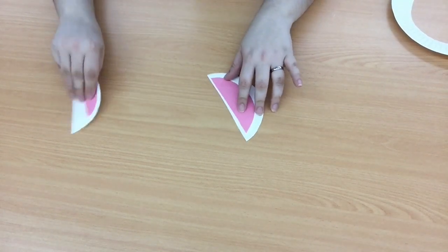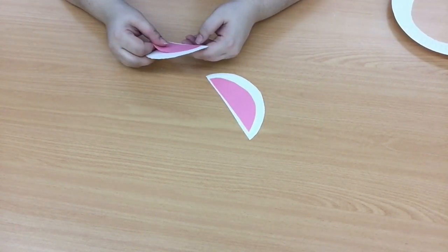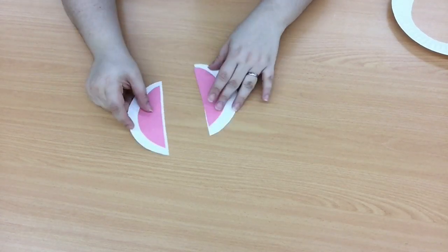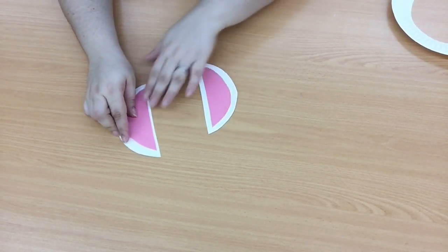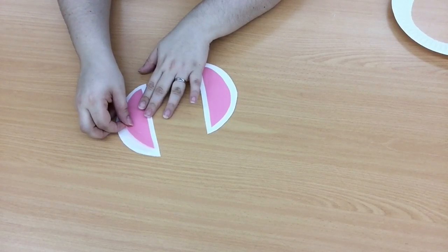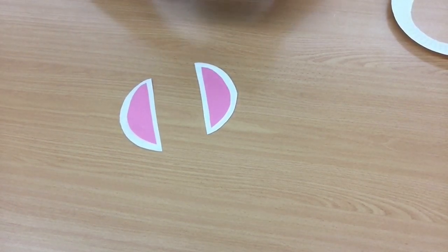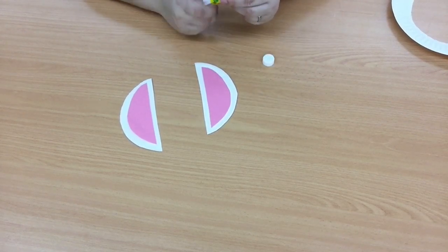Take your scissors and make sure your pieces fit together just right. You might need to move them around a little bit. Once they're in just the right places, it's time to glue. Get your glue stick and let's put together these bunny ears.